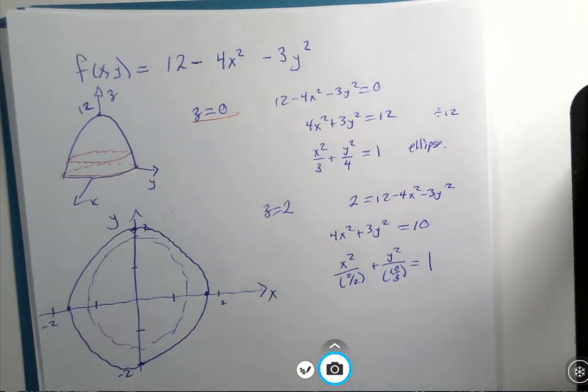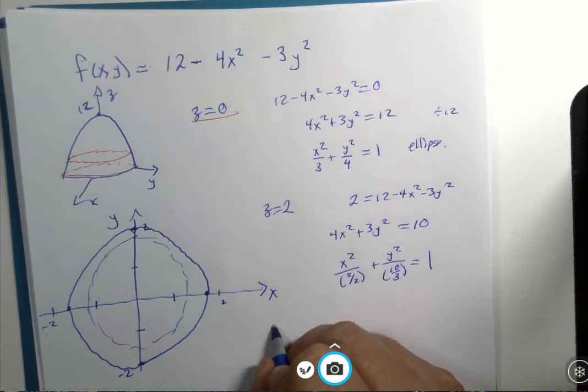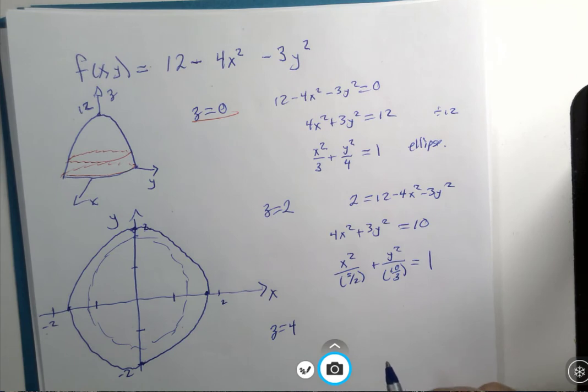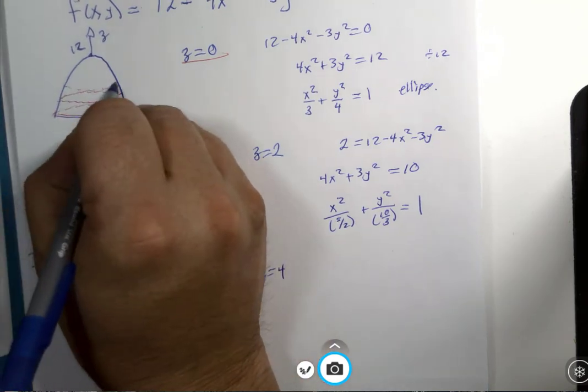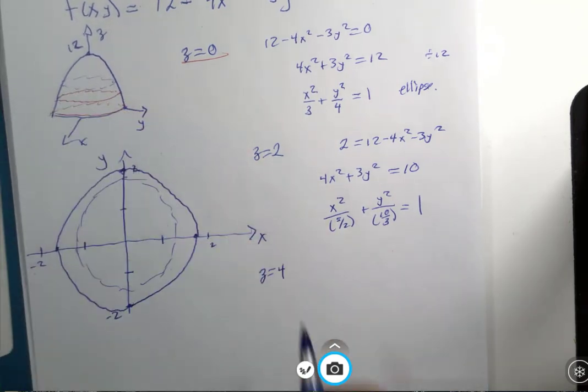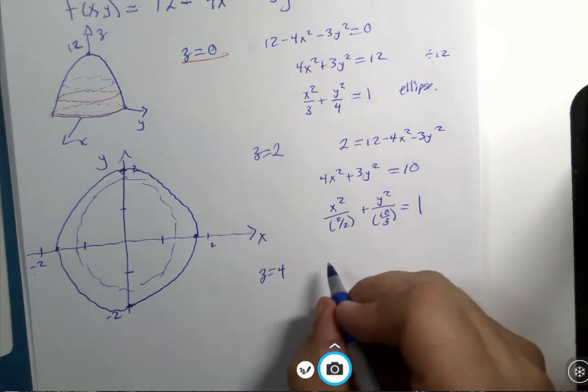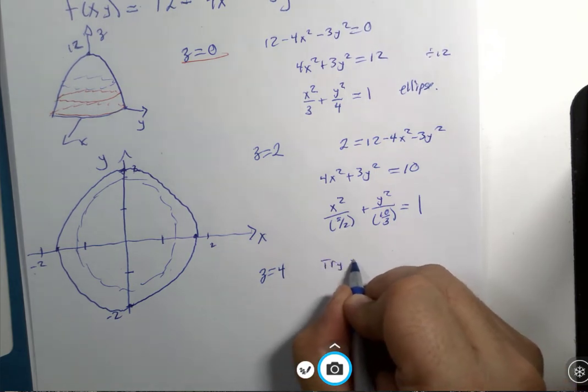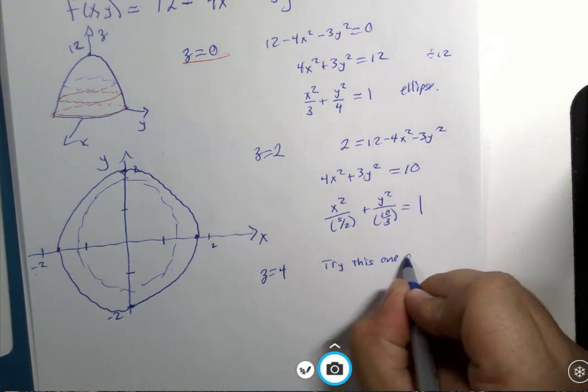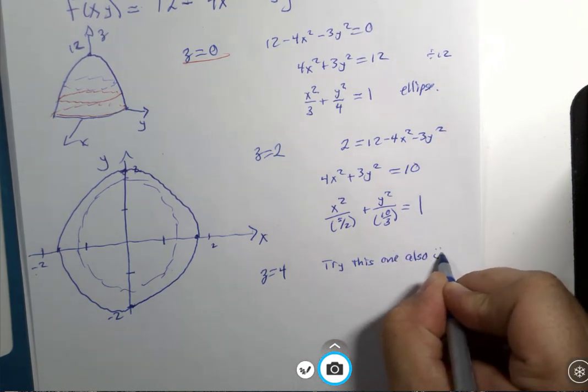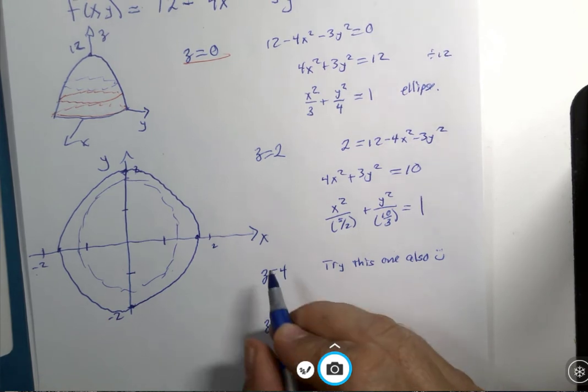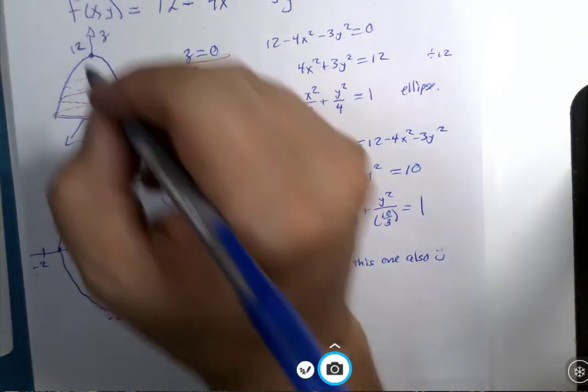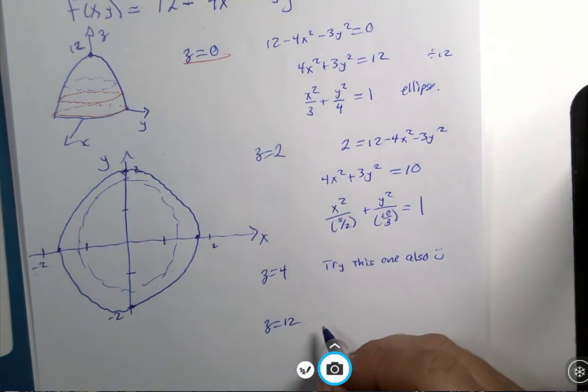If I were to try z equals four, this would be the level curve four units above the ground, and it's going to be another ellipse. And if I kept going until I got to z equals twelve, I should get a cross section that's a single point.